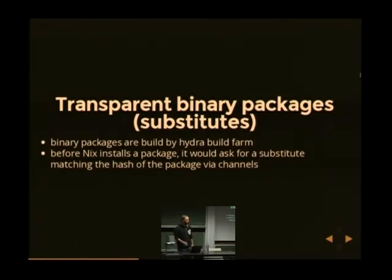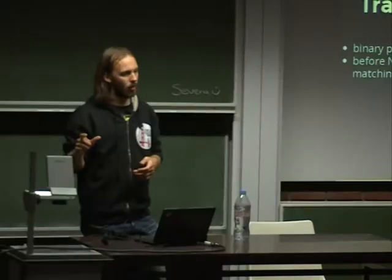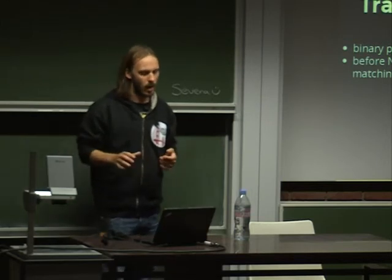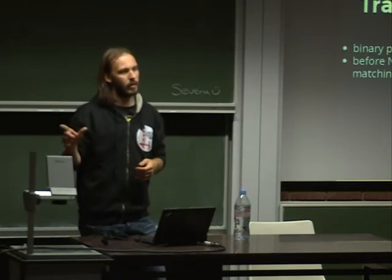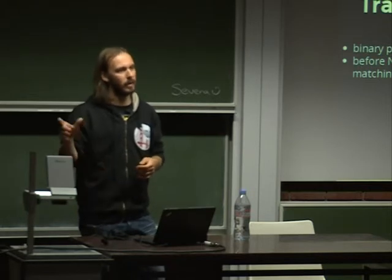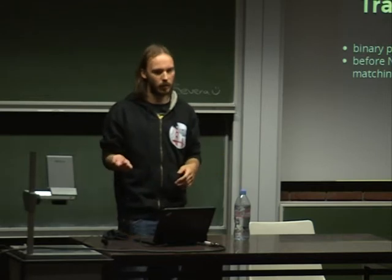When purity actually works — meaning we've removed all impurities — we can have a distribution with both source and binary packages. This hash uniquely identifies all inputs to a package. If we have a build farm (which we do for NixOS), and a package is built there, you can use the binary as a substitute. Before Nix actually builds something, it will go and try to find a substitute — something that already provides a binary package for that hash. So if I install Nginx now it downloads the binary, but if I modify any parameter, the hash changes and it compiles from source.